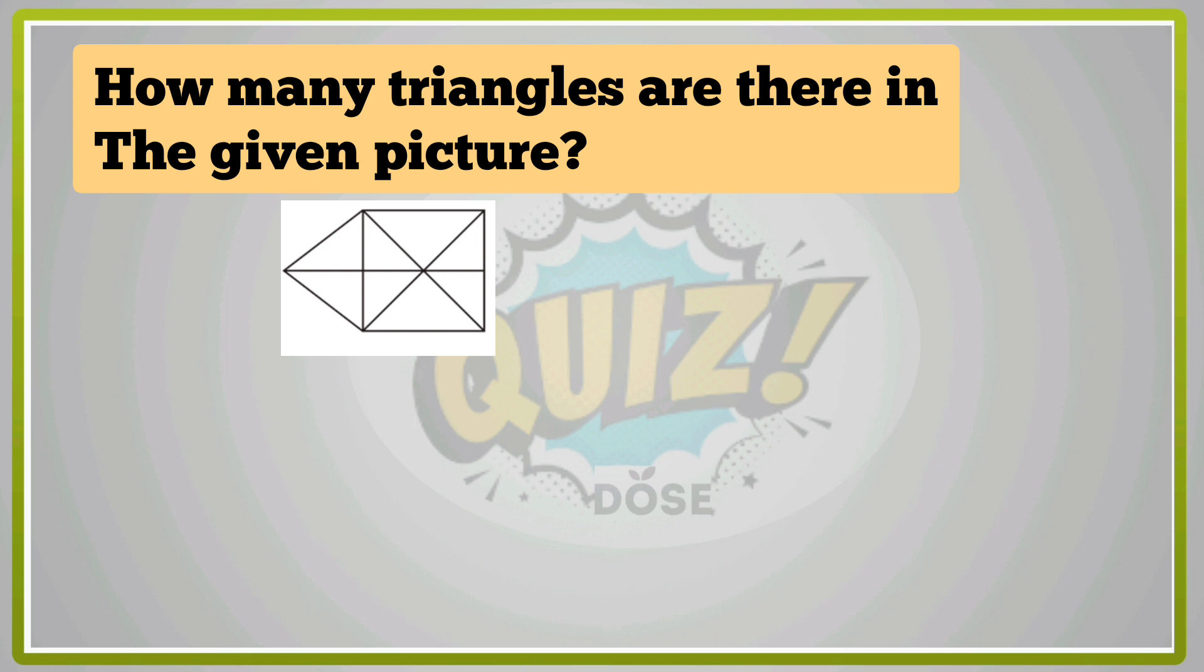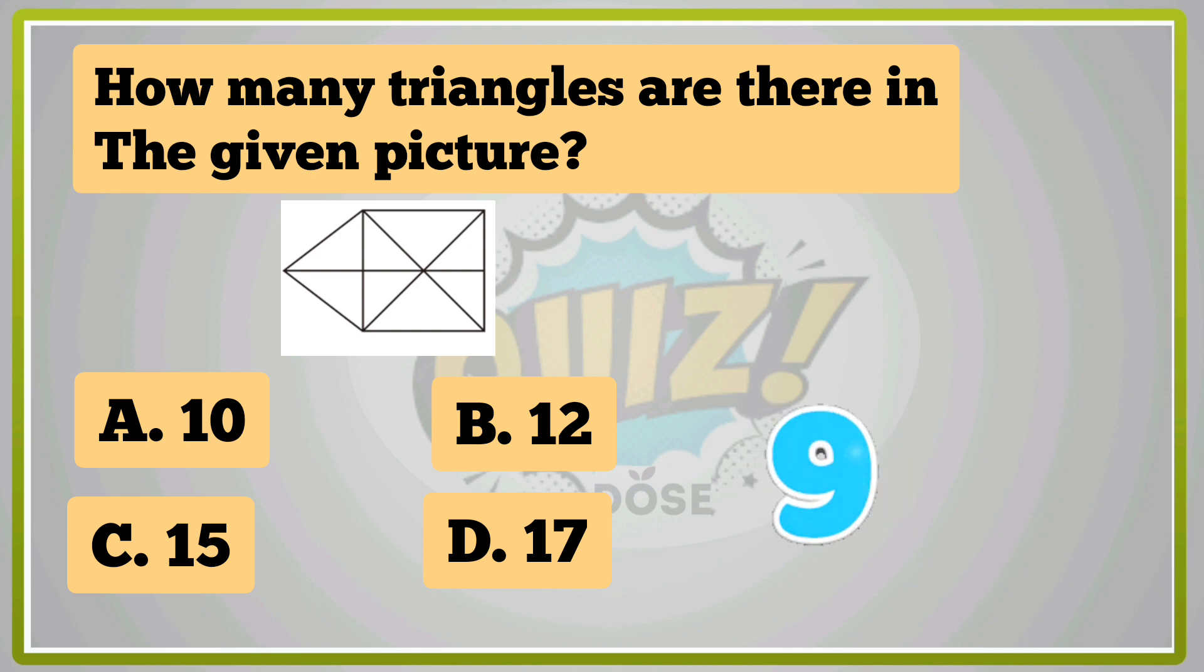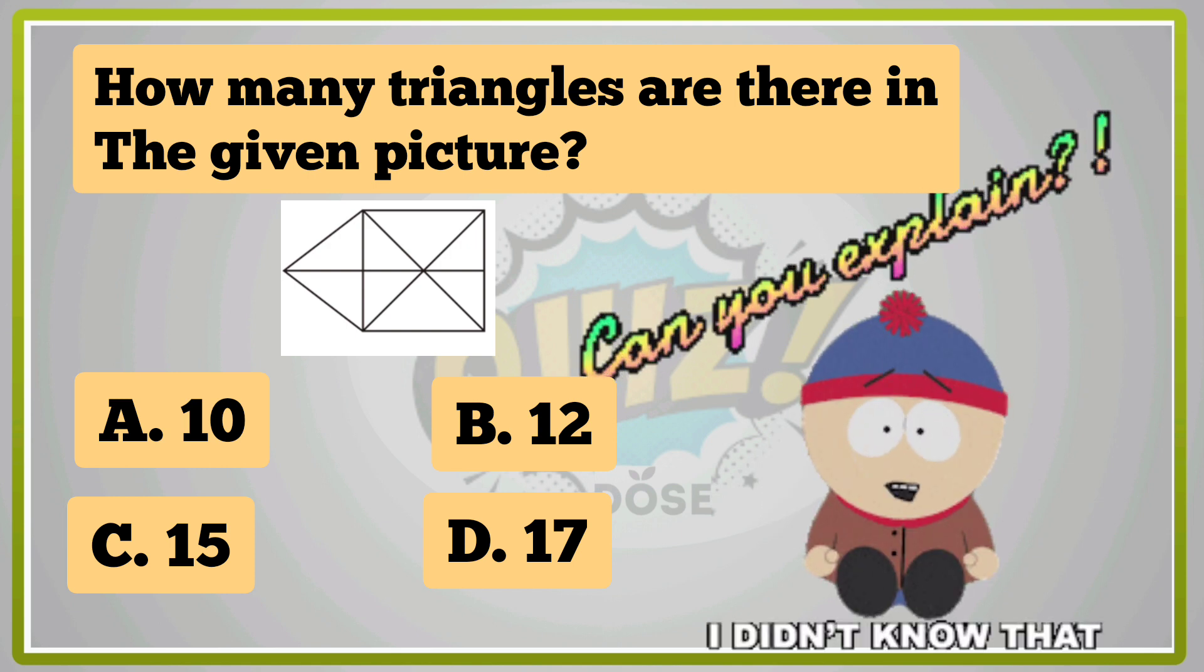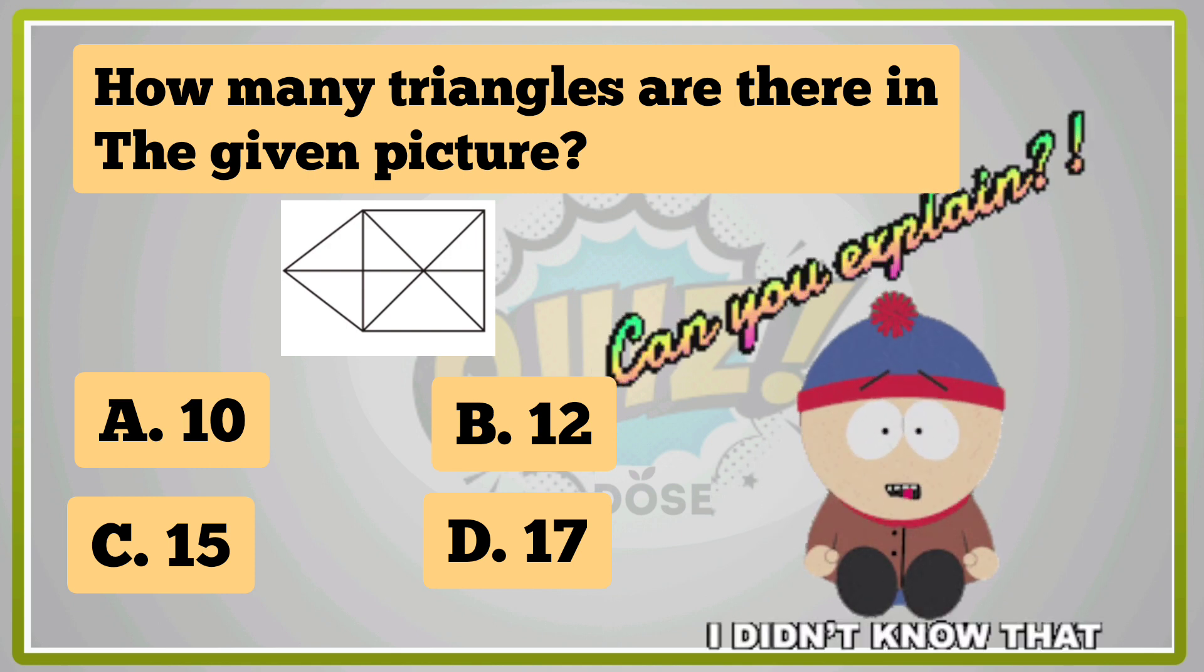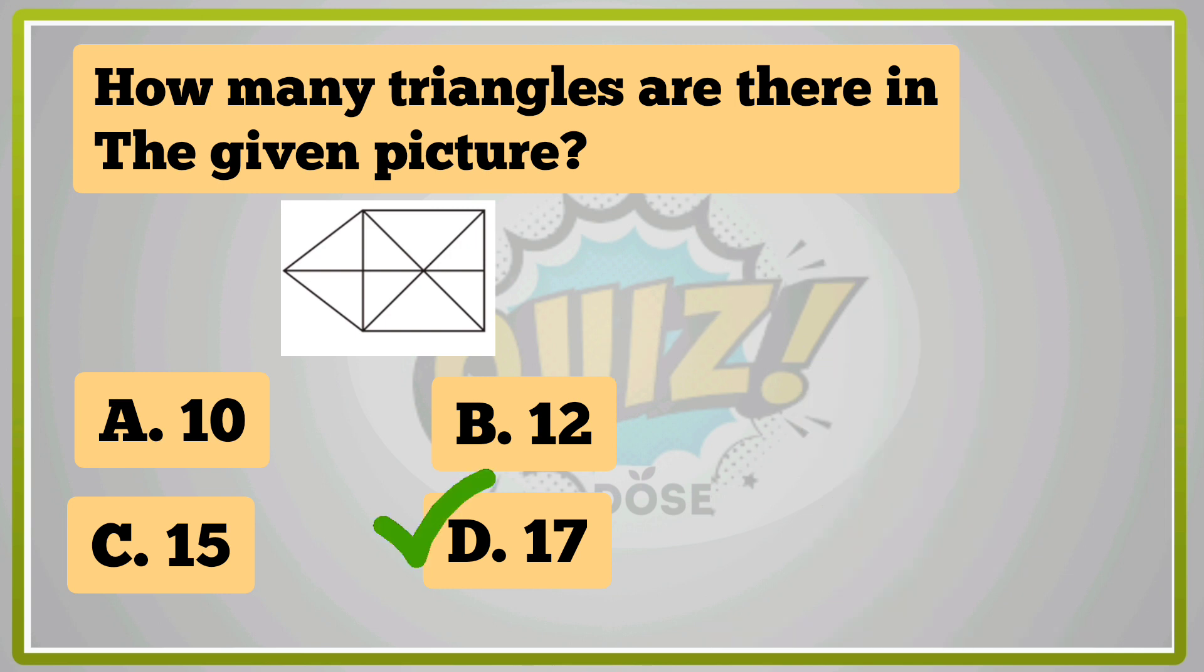How many triangles are there in the given picture? A, 10. B, 12. C, 15. D, 17. Oh, you don't know? Okay, I will explain. D, 17 is right answer.